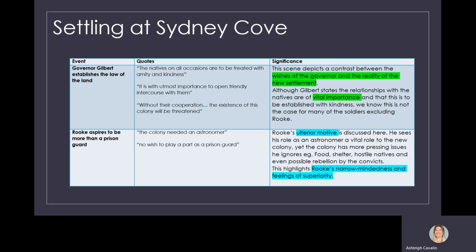Rook aspires to be more than a prison guard. Rook's ulterior motive is discussed here. He sees his role as an astronomer, a vital role to the new colony, yet the colony has more pressing issues that he ignores, such as lack of food, having to establish shelter, the fact that the natives may be hostile, especially now that Surgeon Waymark has fired at them, and even possible rebellion by the convicts. This highlights Rook's narrow-mindedness and feelings of superiority, that he thinks his role is actually essential when it's not.